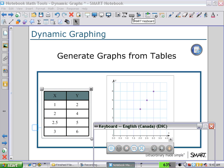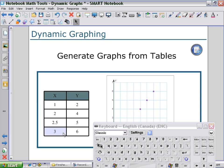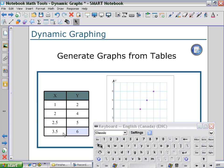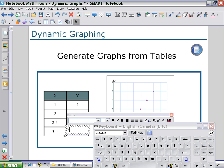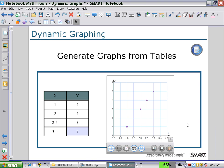So, as I open the keyboard and select 3 and change that to 3.5 in the table, and then the y value, changing that to 7, closing our keyboard, you see the changes in the table but not on the graph.